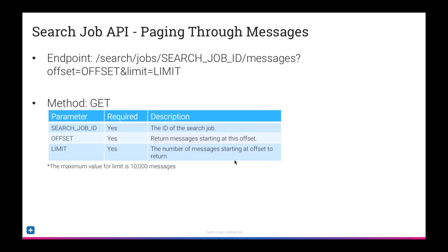Now that we can see the job is done, the next thing is to get the actual data. There are two things you may want to get: messages or records. To get the messages, the endpoint is search/jobs/{ID}/messages, and it's a GET. There are two required parameters: offset, which is the starting location, and limit, which is how many messages you want to return — this is how you paginate through result sets. The maximum value for limit is 10,000 messages. If you have more than 10,000 messages, you'll need to execute multiple calls to get the complete data set.